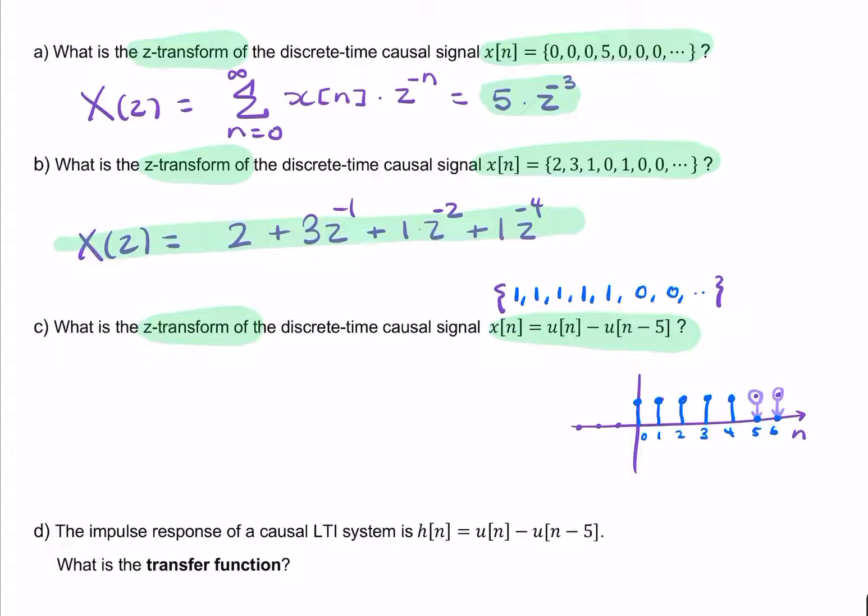Now the z-transform is easy. We can simply say x of z equals z to the power 0, z to the minus 1, 2, z to the minus 3, z to the minus 4, and the remainder will be 0s. We can replace z to the power 0 with simply 1. So that is the answer to part c.